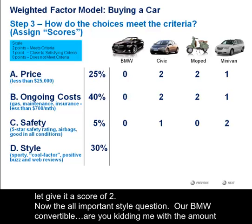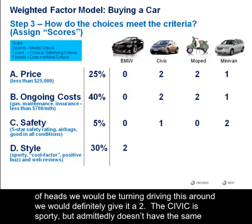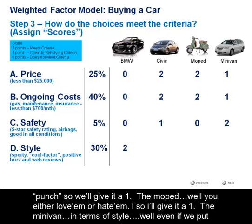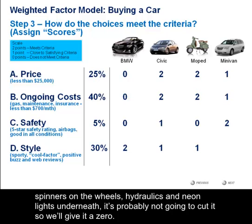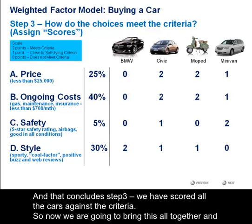Now, the all-important style question. Our BMW convertible — are you kidding me? With the amount of heads we're going to be turning driving this thing around, we definitely have to give it a two. The Civic is sporty, but admittedly it doesn't have the same punch, so we're going to give it a one. The moped — well, you either love them or you hate them. I personally like them, but I recognize that some people don't, so I'm going to give this a one. The minivan — in terms of style, even if we put spinners on the wheels or hydraulics and neon lights underneath, it's probably not going to cut it. So we're going to give this minivan a zero. And that concludes step three — we've gone through and scored all of the cars against our criteria.